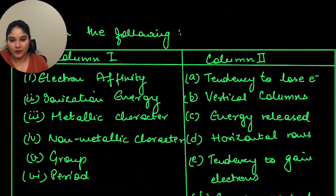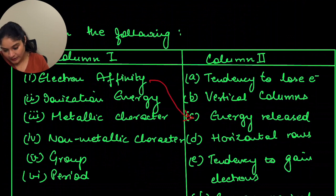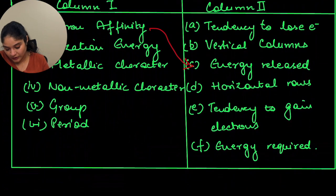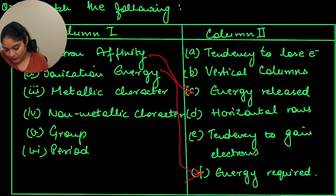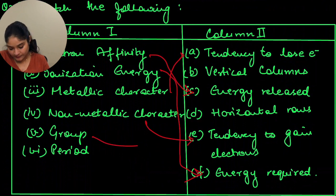Question 25: match the following. Electron affinity — energy released when you add an electron, so the answer is energy released. Ionization energy — energy required to remove an electron, so it matches with energy required. Metallic character — tendency to lose electrons. Non-metallic character — tendency to gain electrons. Group — vertical columns; period — horizontal columns.